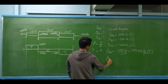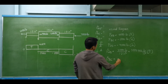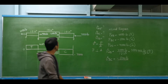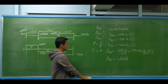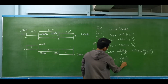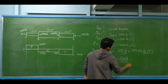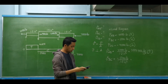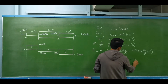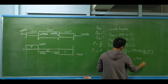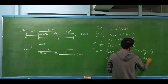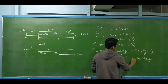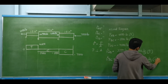For segment BC, we have negative 5,000 pounds divided by the cross-sectional area of 1.8 square inches. Negative 5,000 divided by 1.8 equals 2,777.778 pounds per square inch. This is negative, which means it is under compression.